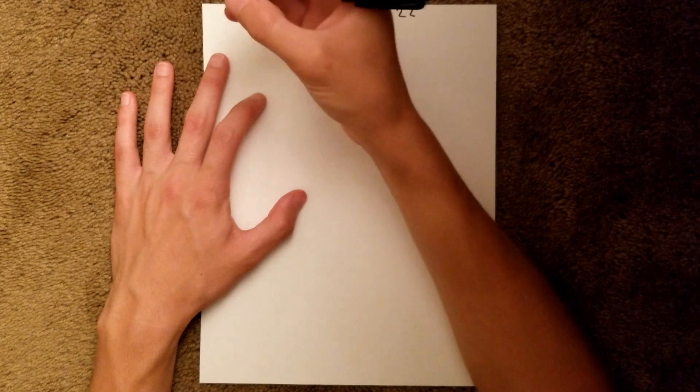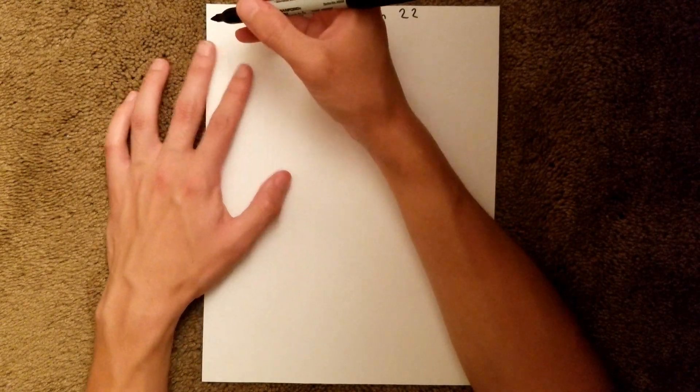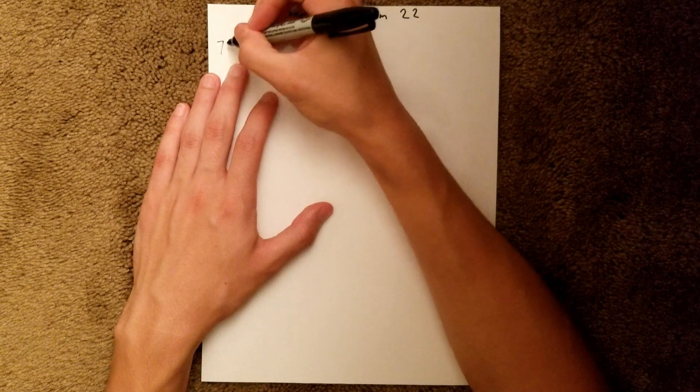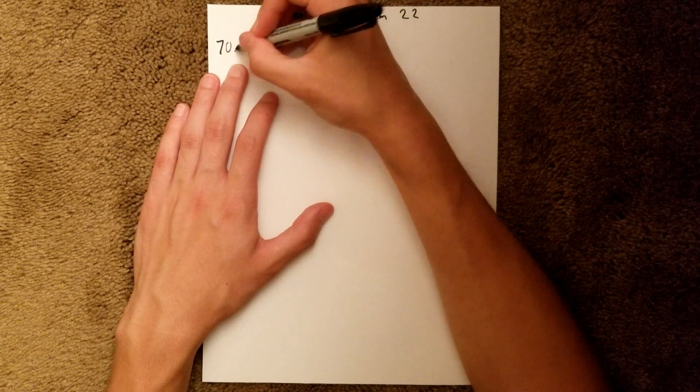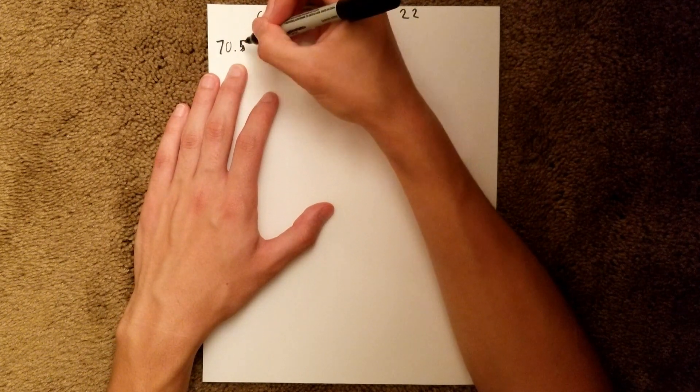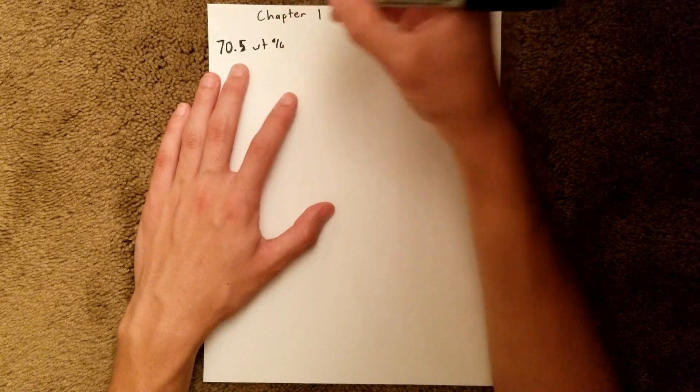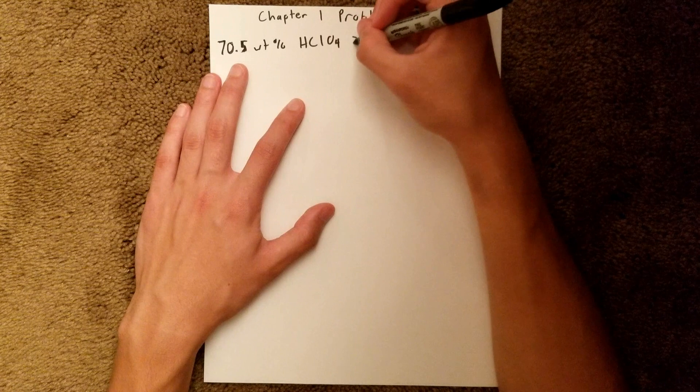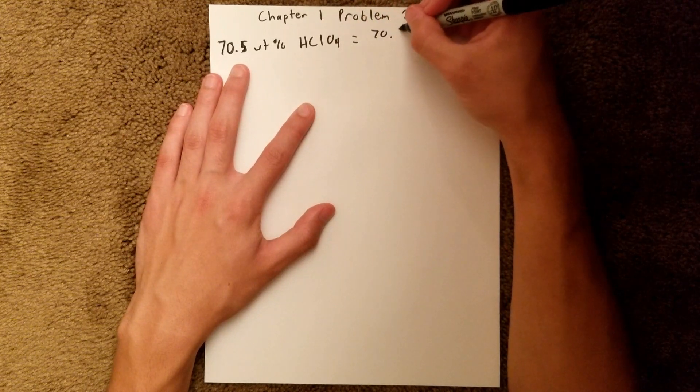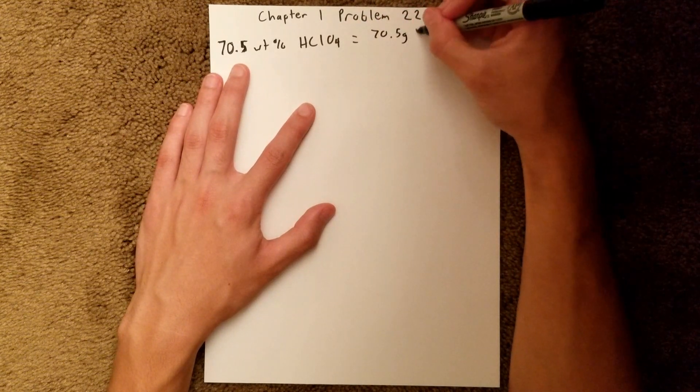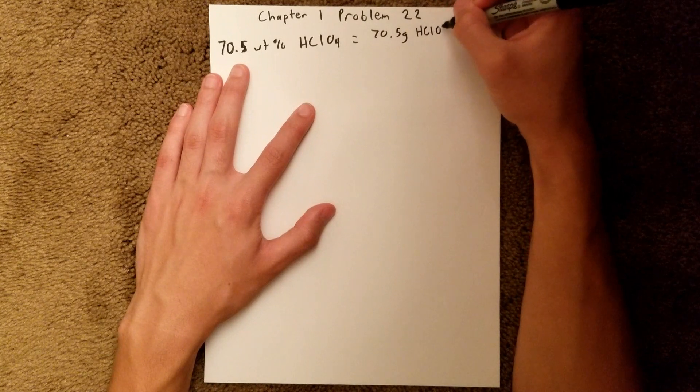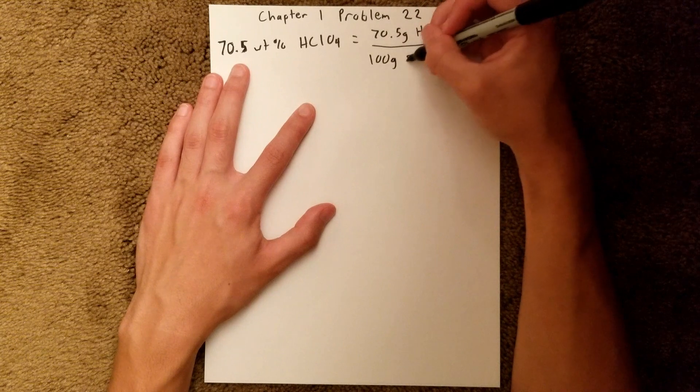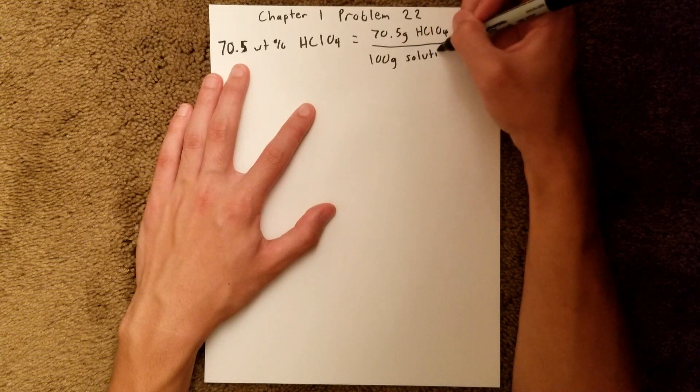So, we are given the weight percent of the solution, we are given 70.5 weight percent HClO4, which is equal to 70.5 grams of HClO4 per 100 grams of solution.